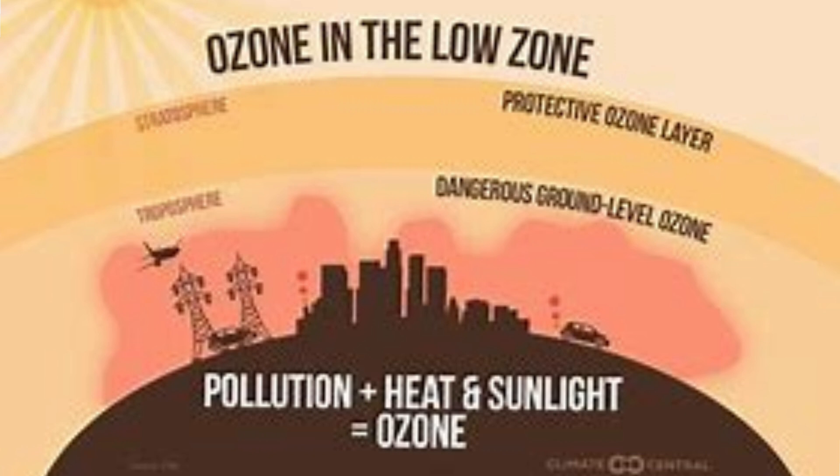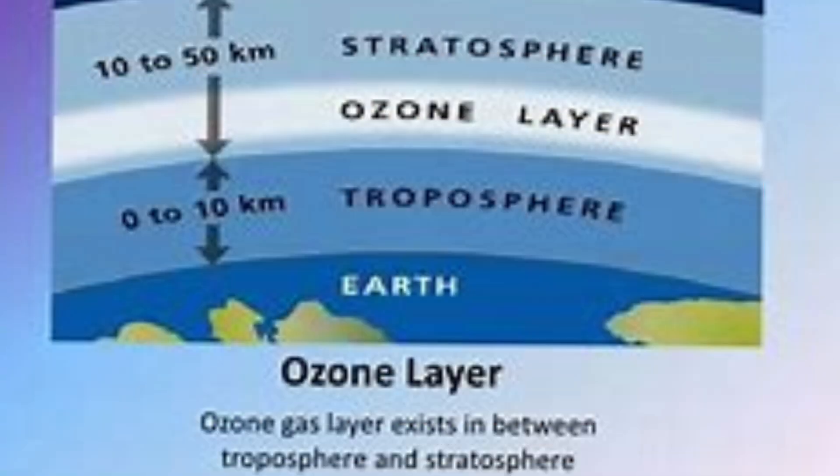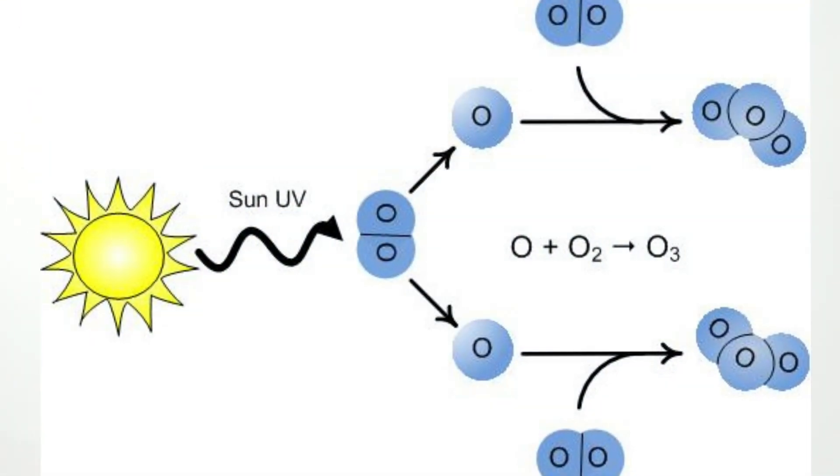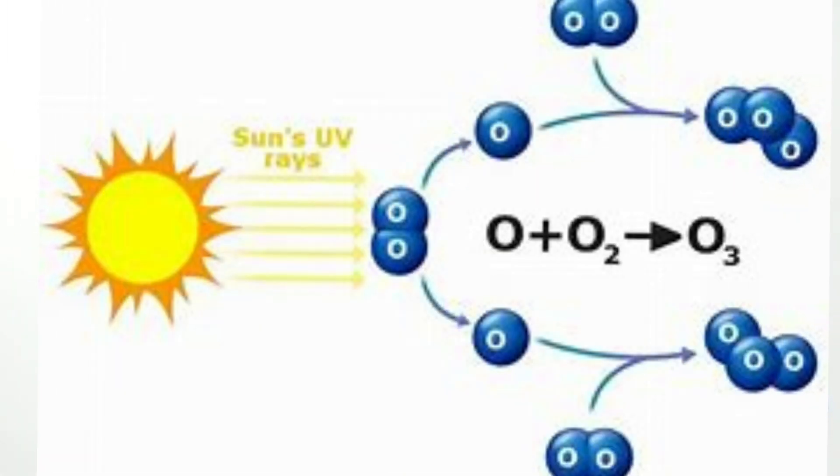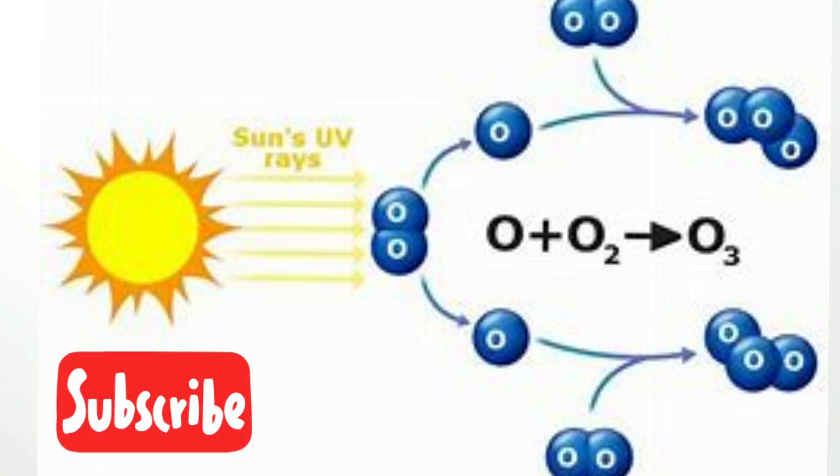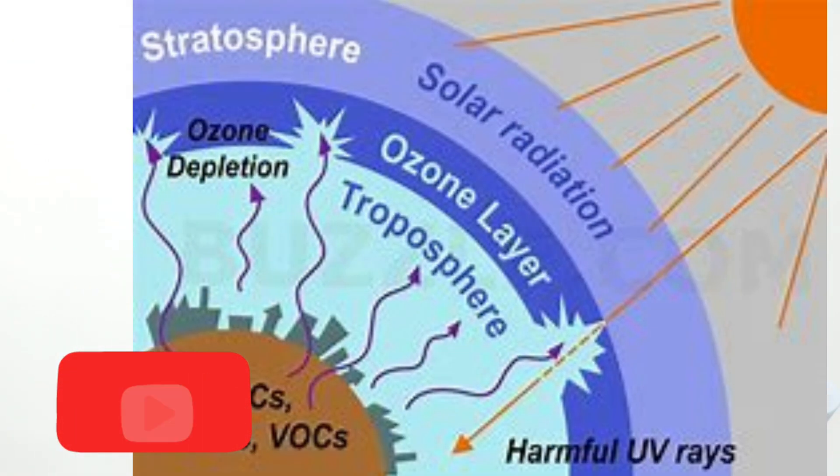But it is concentrated at a height of about 25 kilometers in the stratosphere. The ozone layer exists because oxygen filtering from the top of the troposphere reacts with the influence of ultraviolet radiations to form ozone. Now we will see this reaction on the board.